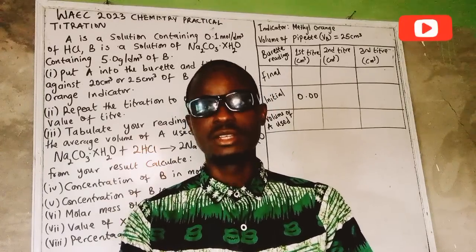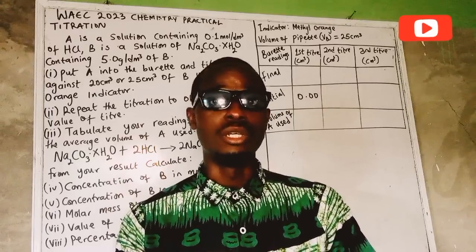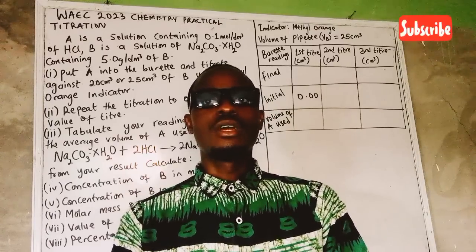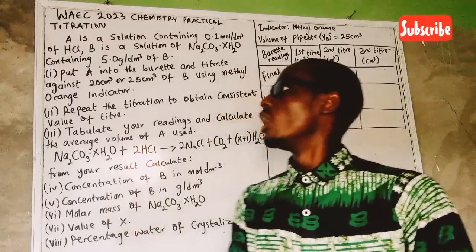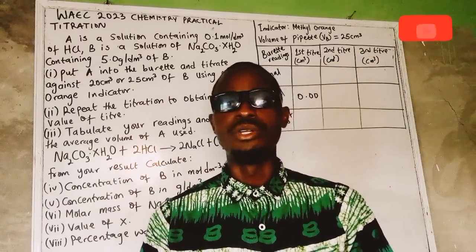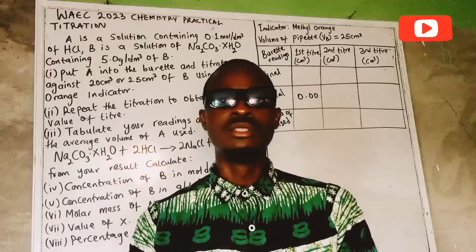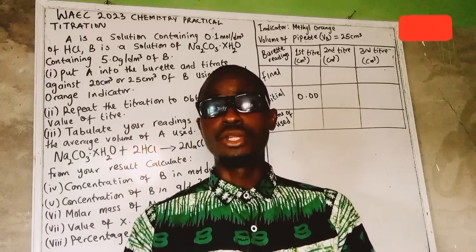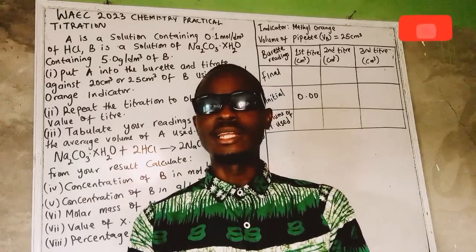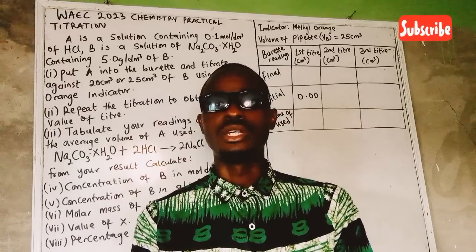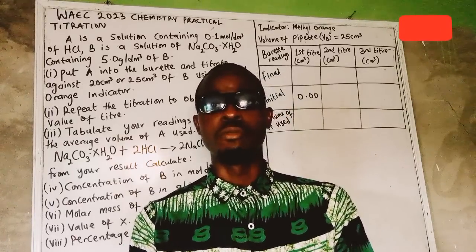There is a little change in this practical. The reaction is between a hydrated salt which is a weak base and a strong acid which is HCl. The best indicator for this type of reaction is methyl orange - that is the most suitable indicator. However, in this video I'm going to be using phenolphthalein indicator. The best indicator is methyl orange.